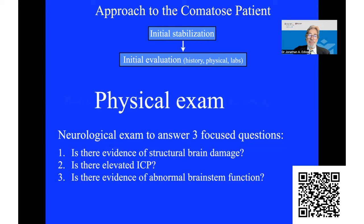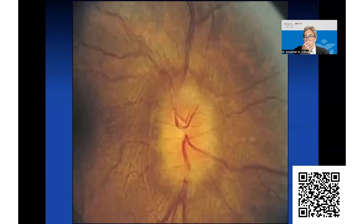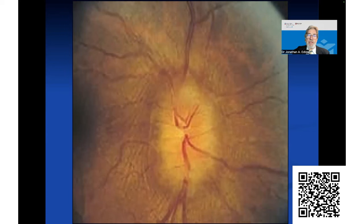In the neurological exam, there are three basic questions I pose with a comatose patient: is there evidence of structural brain damage? Is there evidence of elevated intracranial pressure? And is there evidence of abnormal brainstem function? This is becoming a bit of a dying art, but if one were to look in the fundi, you might see papilledema, indicative of elevated intracranial pressure. It doesn't develop in minutes or hours — it takes many hours to days — but it's worth looking for.